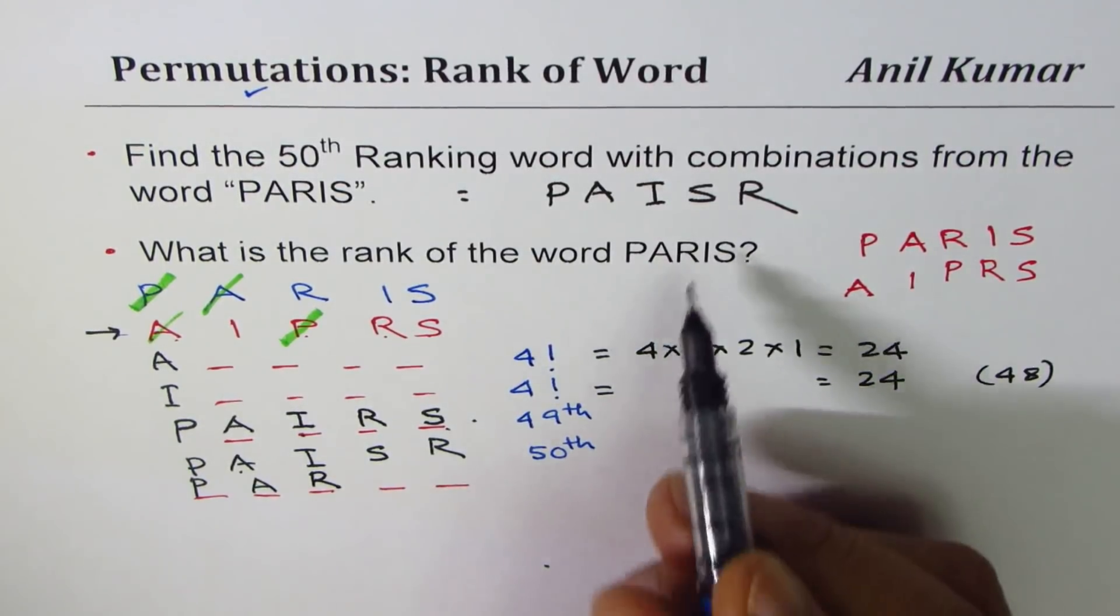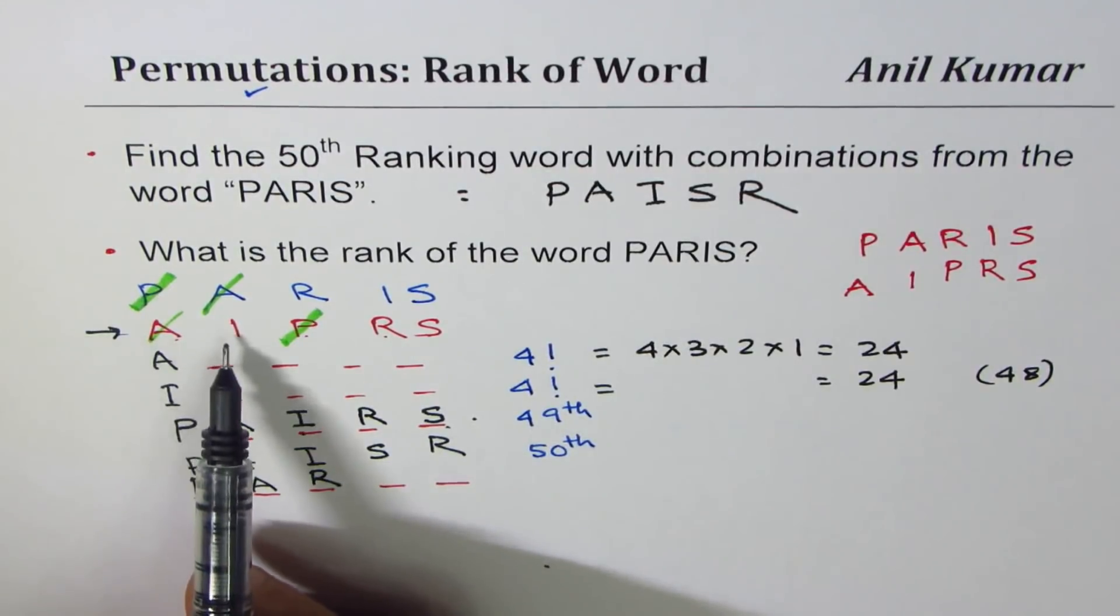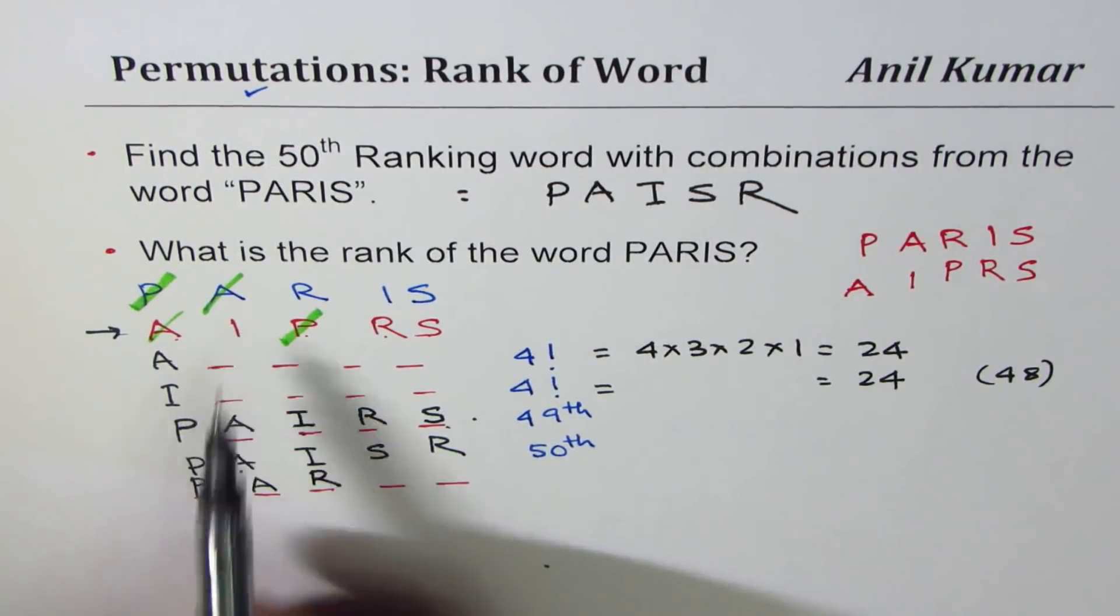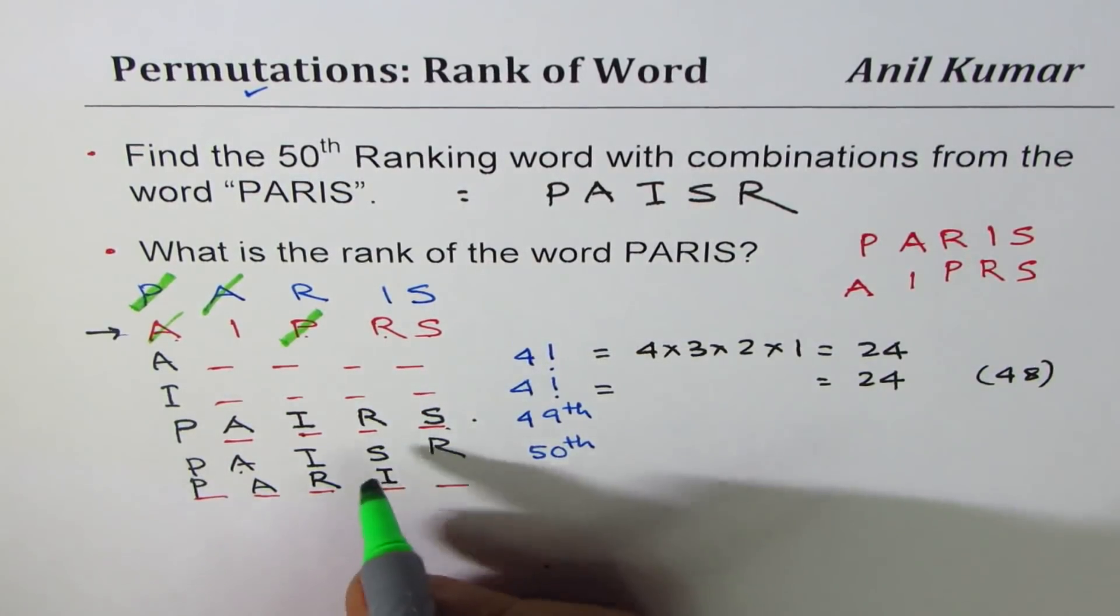And we have to fill in two positions. We'll continue to find the rank of Paris. So if you go from the left side, I is remaining. So we'll put I here. And then S. I matches. Do you see that? I matches.